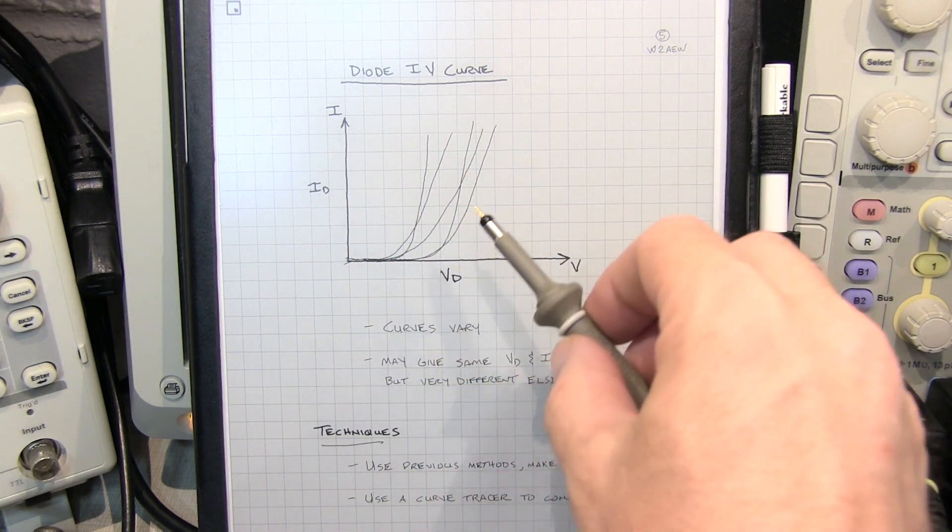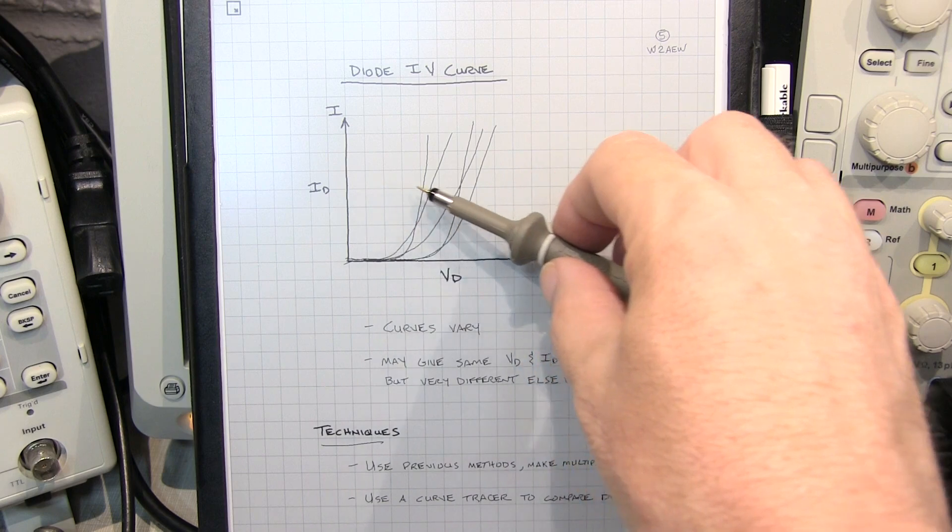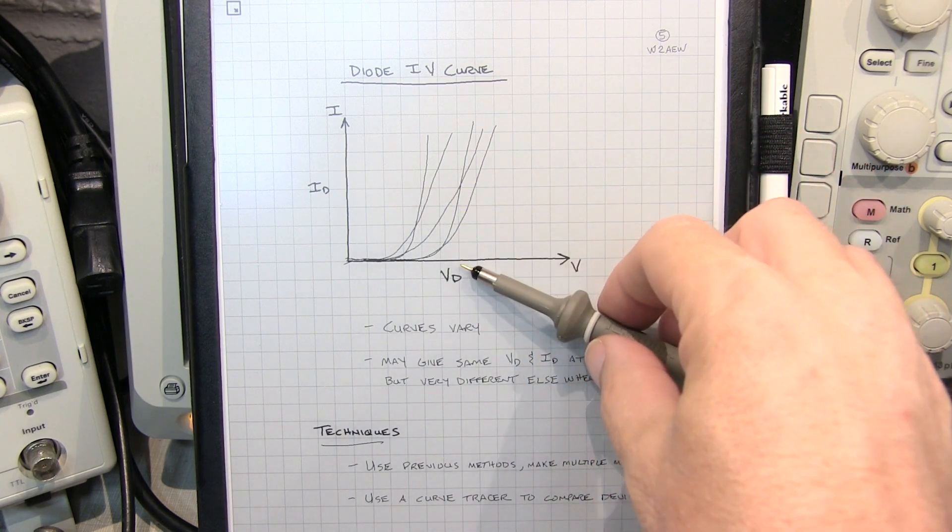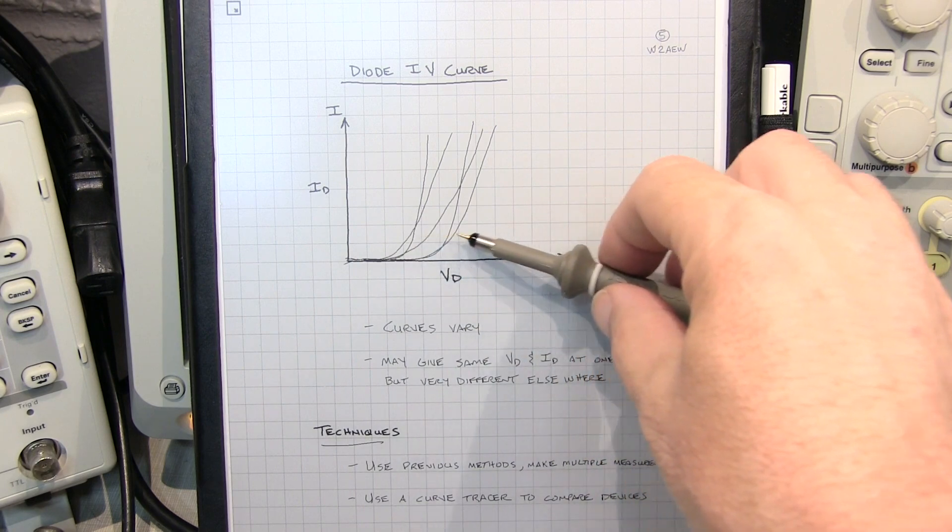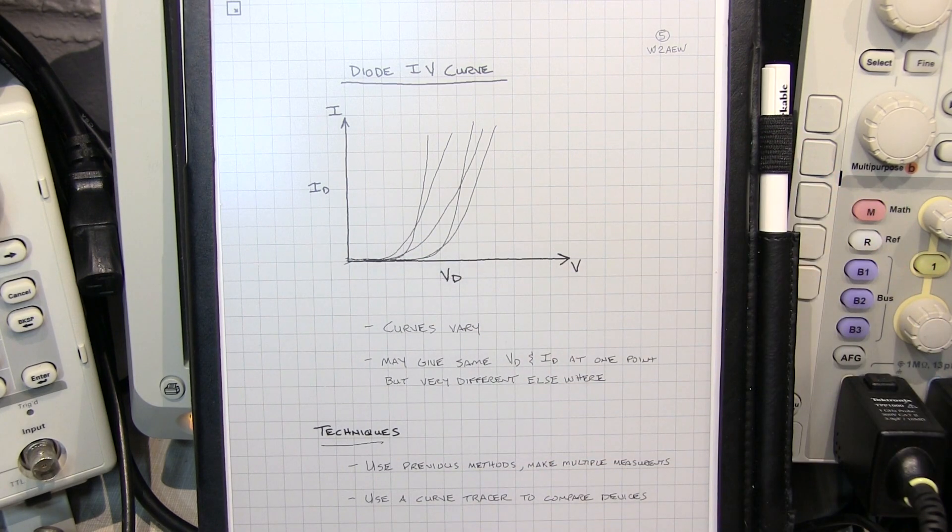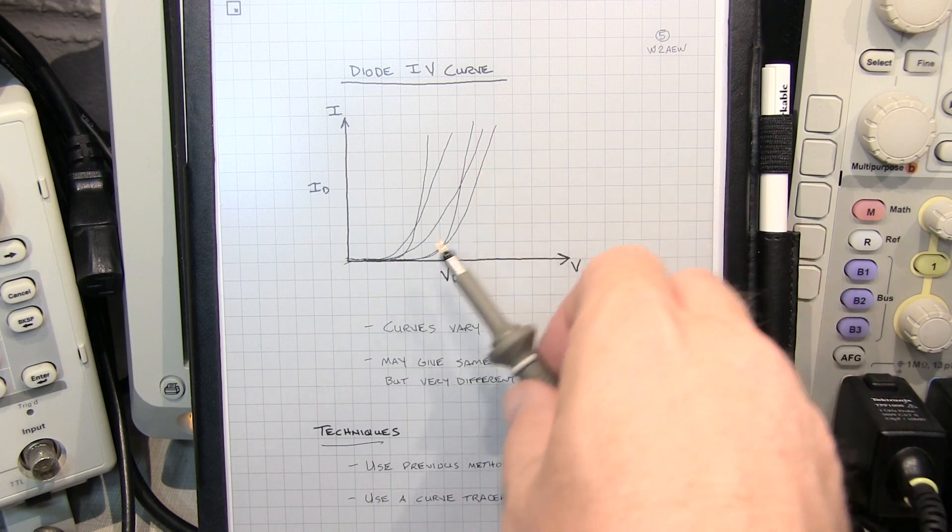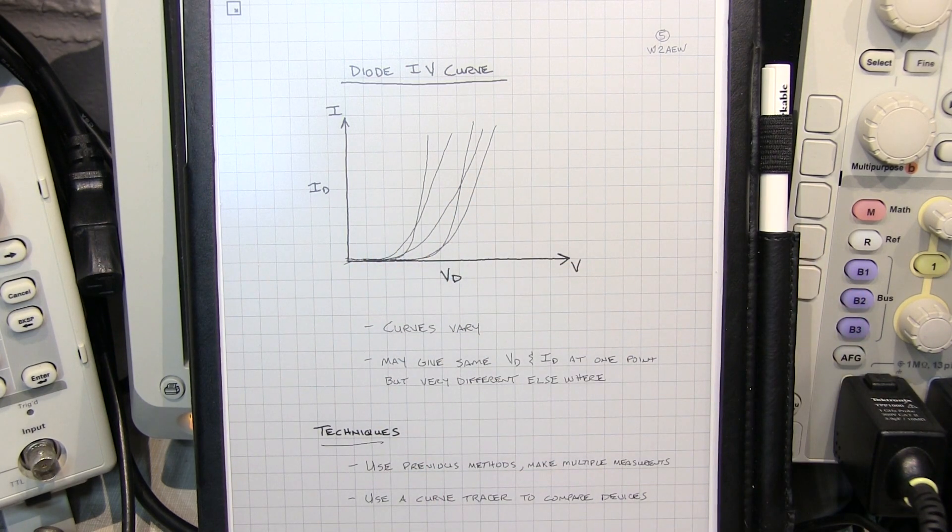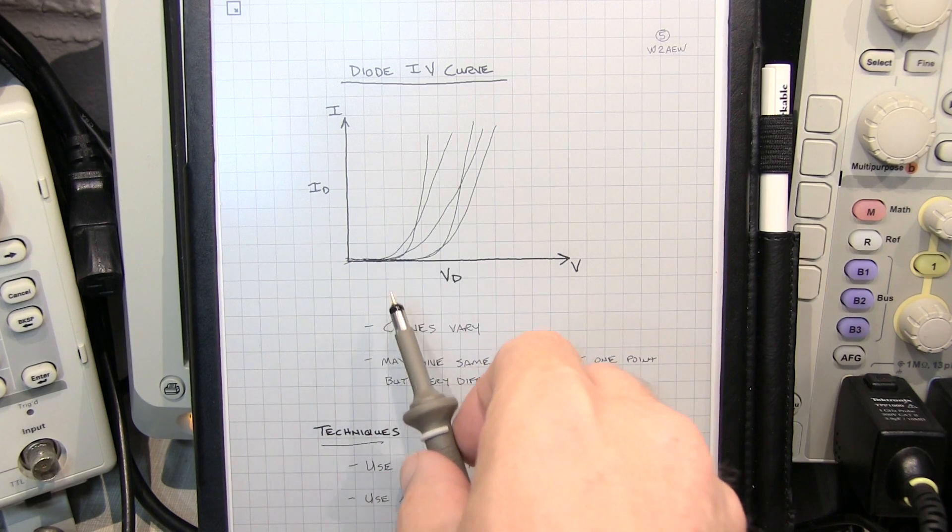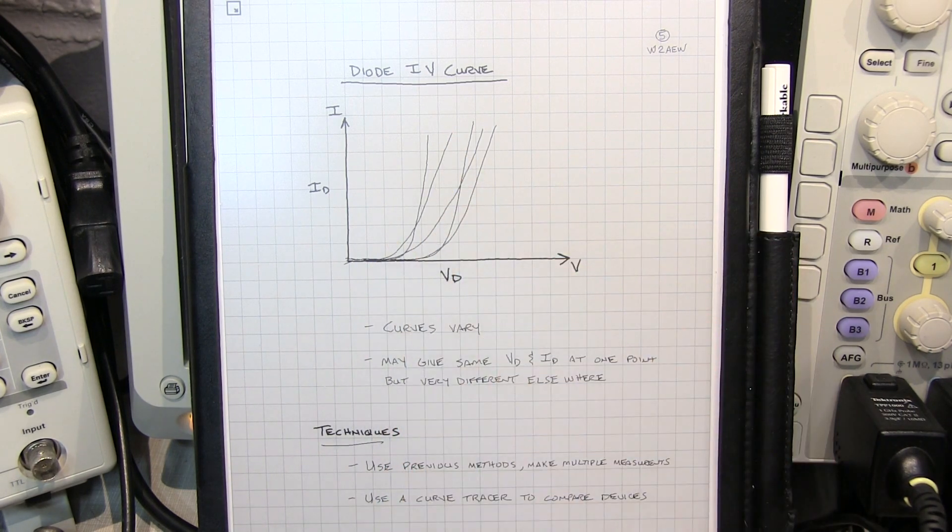And what you'll find is that, for example, at this particular test current, these two diodes have got the same exact voltage. But at a much lower current, they'd have a very different voltage. So it really depends on where that device is going to be used, and if it needs to match over a wider range of diode currents, and if that's the case, and that's actually probably most likely the case, you really need to try to match multiple points across that curve.